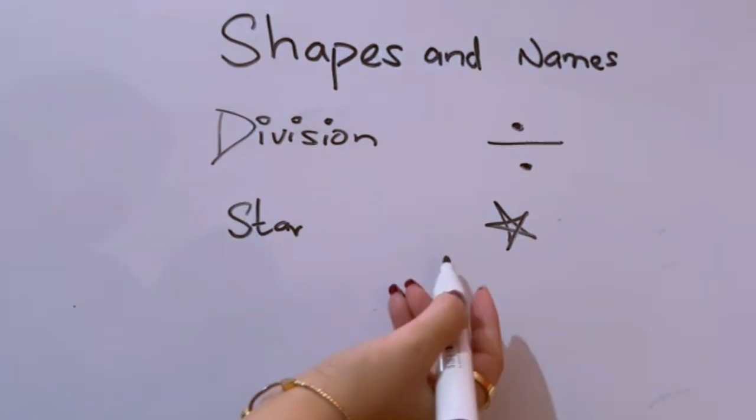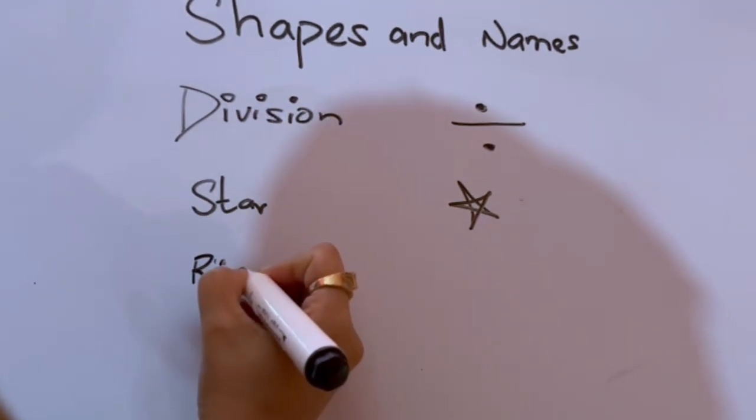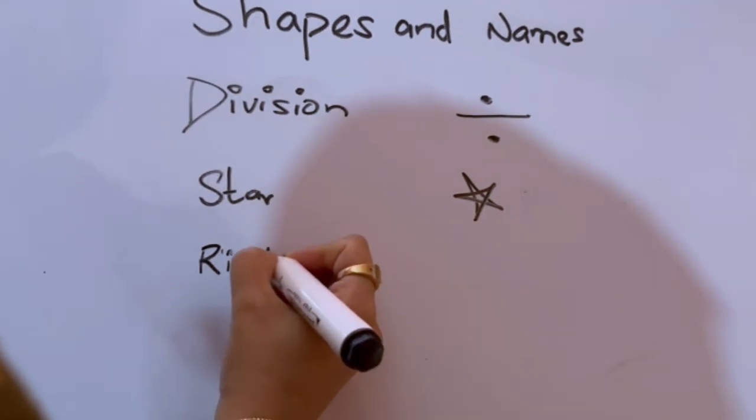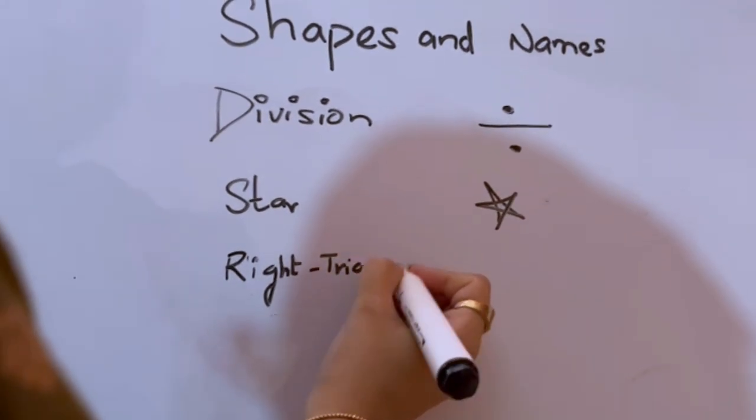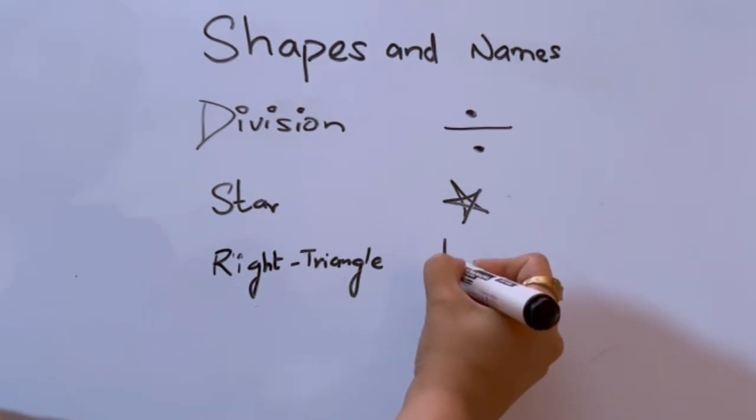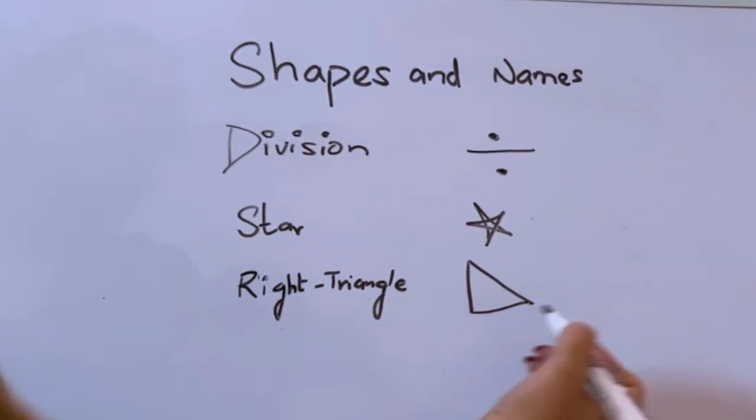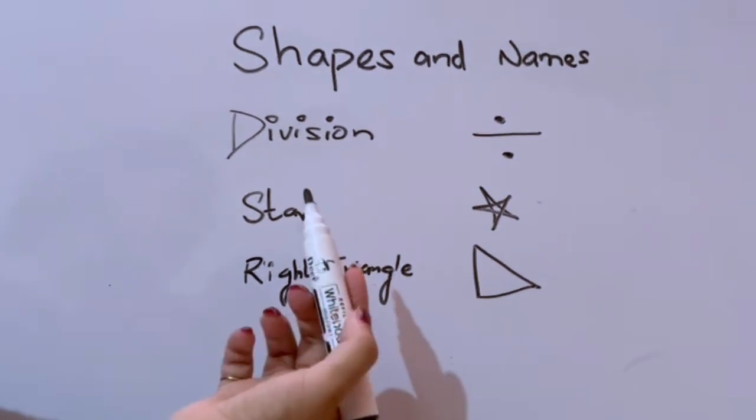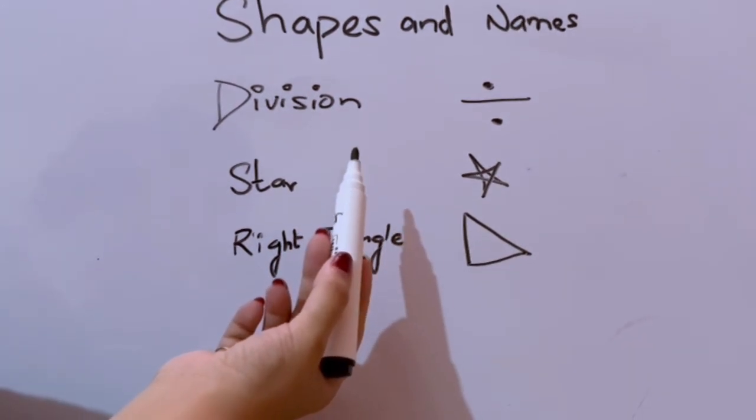Star. Right triangle. Division: D-I-V-I-S-I-O-N.